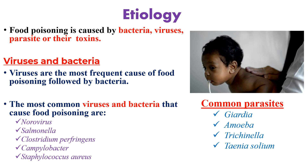Food poisoning is caused by bacteria, viruses, or toxins in the food we eat. Viruses are the most frequent cause of food poisoning, followed by bacteria. The most common viruses and bacteria that cause food poisoning are norovirus, Salmonella, Clostridium, Campylobacter, and Staphylococcus. From parasites, Giardia, amoeba, and Taenia species are the most common.